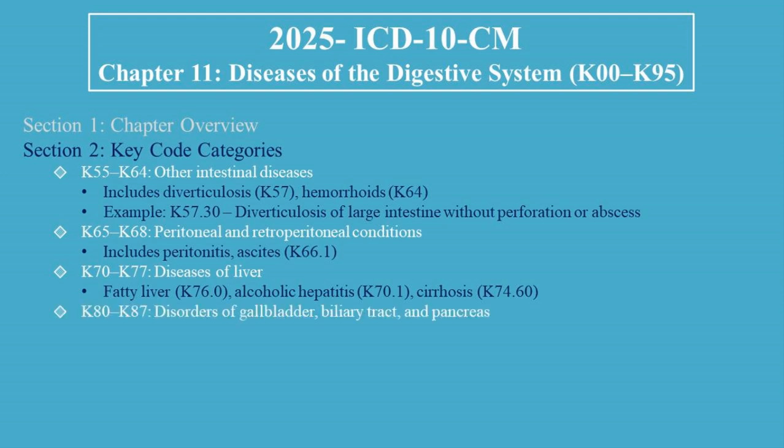K80 to K87 covers disorders of the gallbladder, biliary tract, and pancreas. This includes gallstones (K80.2x), cholecystitis, and pancreatitis (K85.x).